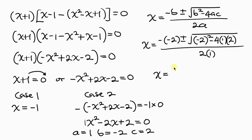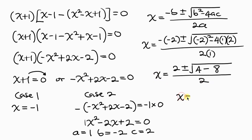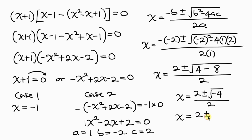This simplifies to x equals 2, plus or minus the square root of 4 minus 8, all over 2. That gives x equals 2, plus or minus the square root of negative 4, all over 2. The square root of negative 4 is 2i, since a negative inside a square root indicates a complex number. So x equals 2 plus or minus 2i, all over 2.